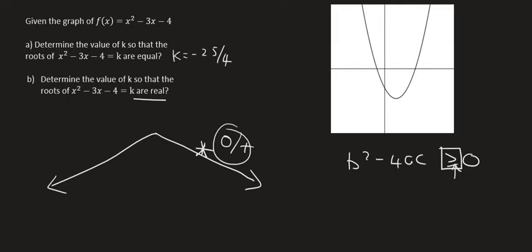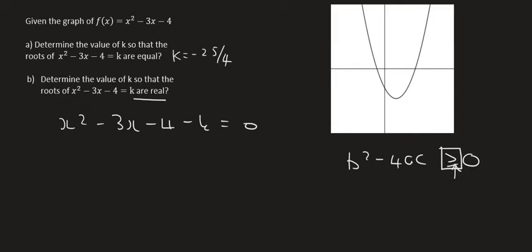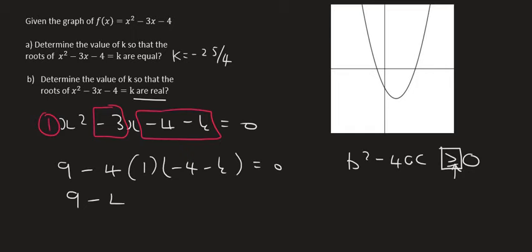And so, then the approach will be the exact same. So, we'll bring the k over, make it equal to 0. So, a is 1, b is minus 3, and then c is this over here. And so, we can say b squared, which is 9 again, or minus 3 squared is 9. a is 1, and then c is minus 4 minus k. If we go ahead and multiply all of this out and simplify it, we will get 9 plus 16 plus 4k.